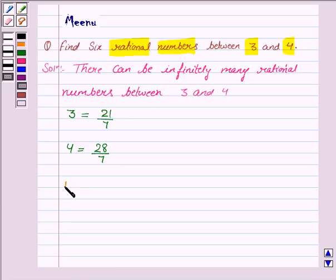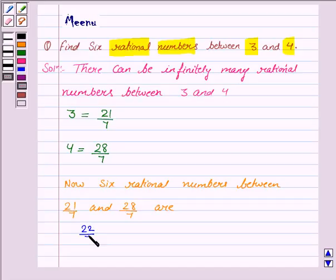Now, 6 rational numbers between 21 upon 7 and 28 upon 7 are 22 upon 7, 23 upon 7, 24 upon 7, 25 upon 7, 26 upon 7, and 27 upon 7.